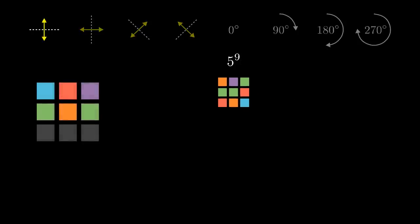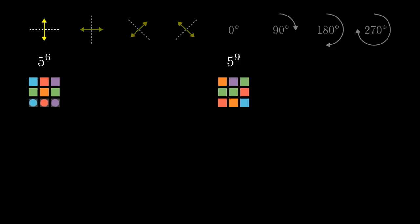A picture symmetrical along the horizontal axis is fully determined by these 6 squares. The remaining 3 squares are forced by the symmetry. So the number of pictures symmetrical with respect to this symmetry is 5 to the power of 6. The vertical axis works the same naturally.